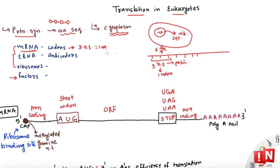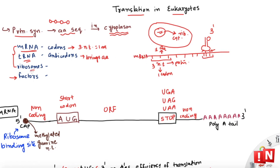The mRNA has all the codons specifying which protein has to be made. To read this information, tRNA comes in with its anticodon complementary to the codon on mRNA. The tRNA binds to a particular codon via its anticodon, and brings in the correct amino acid attached to its 3' end.